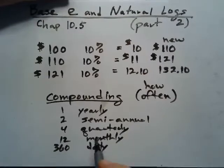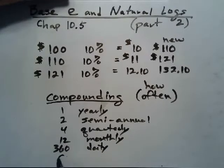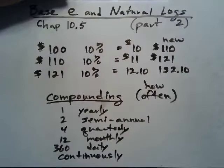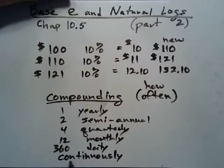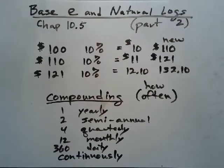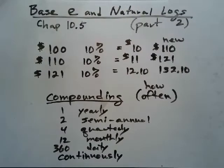What would happen if we compounded continuously — an infinite number of times? You might think you'd gain a lot more money, but while it is a little more, it isn't dramatically more, because you're compounding more often. We have a formula for this that uses e. The difference between periodic and continuous compounding isn't huge, but continuously compounding interest is usually the better choice if you have it.